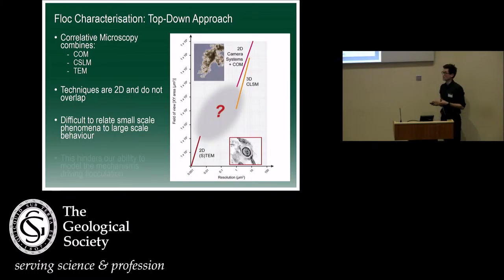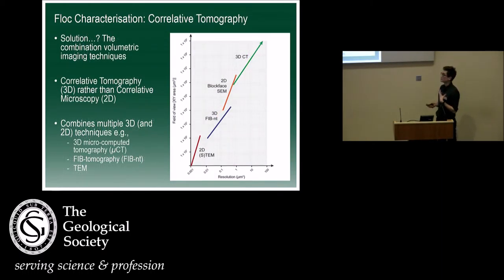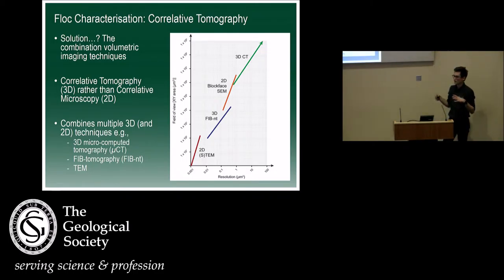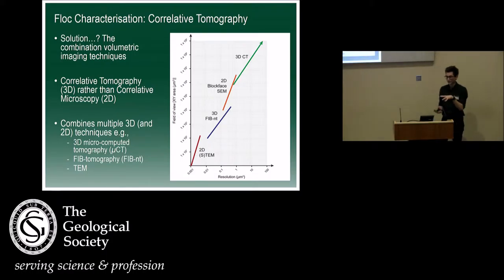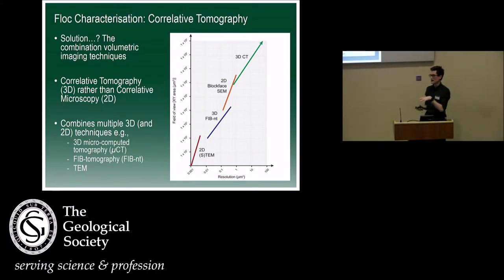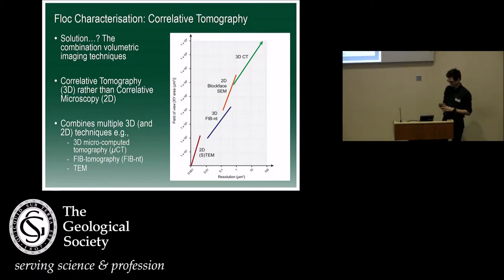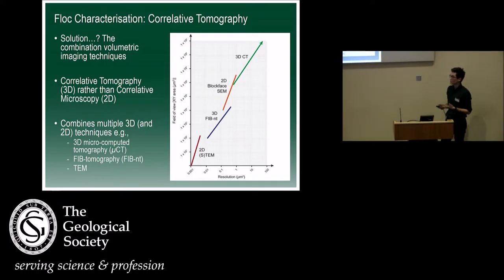So there's this critical spatial and dimensional gap. A potential solution to this problem is the use of correlative tomography, which combines multiple 3D imaging techniques to investigate a single sample — basically like a Russian doll effect. You collect data sets at multiple length scales and get a full image of its structure for one sample. So this is what we wanted to do: we wanted to see whether we could adapt this technique, which is commonly used in cell biology and material science, and see whether we could investigate these really fragile entities.